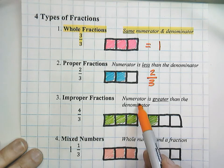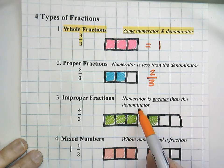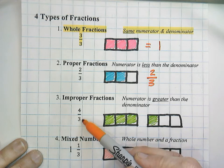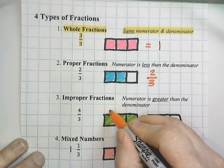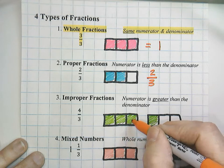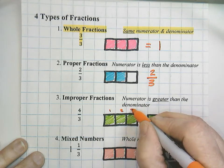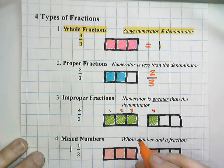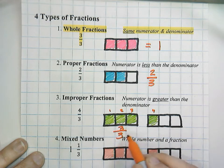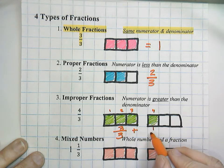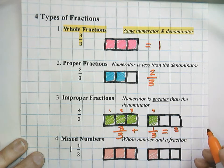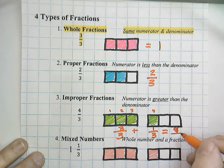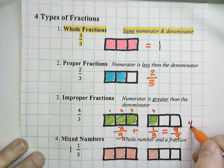An improper fraction is where the numerator is greater than the denominator — in other words, the top number is bigger than the bottom. For example, 4 thirds: notice that the 4 on top is greater than the 3 on the bottom, and that's called an improper fraction. You can show it with a model: we have 1, 2, 3 thirds in the first shape, and this one over here represents a fourth. So we could write 3 thirds plus 1 third, and 3 plus 1 equals 4, with thirds on the bottom, giving us 4 thirds.